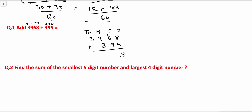9 plus 1 carry is 10, plus 6 is 16, write 6 and carry 1. 9 plus 1 carry is 10, plus 3 is 13, write 3 and carry 1. Then 3 plus 1 carry is 4. So the sum of 3968 and 395 is 4363.